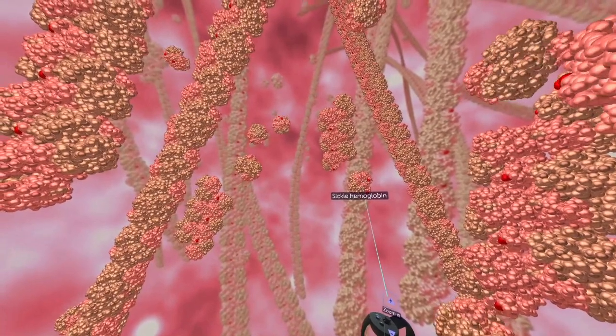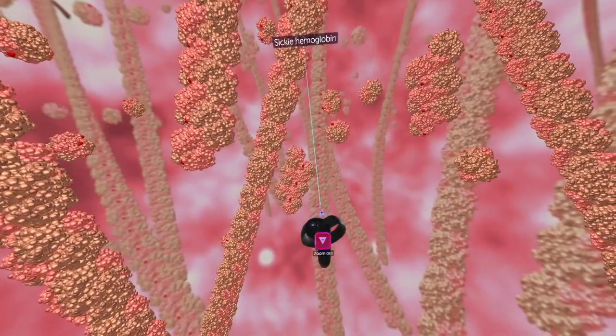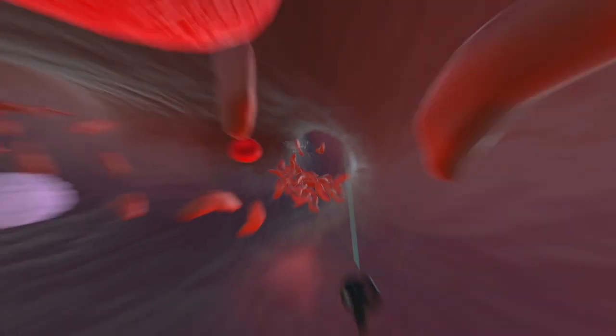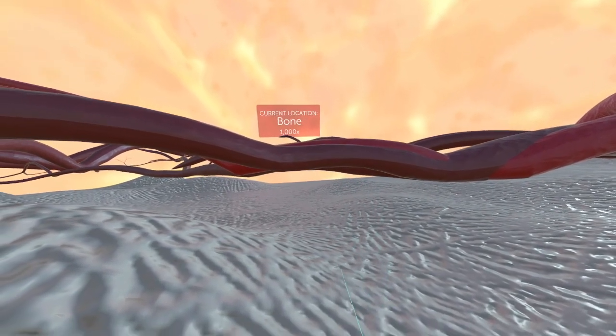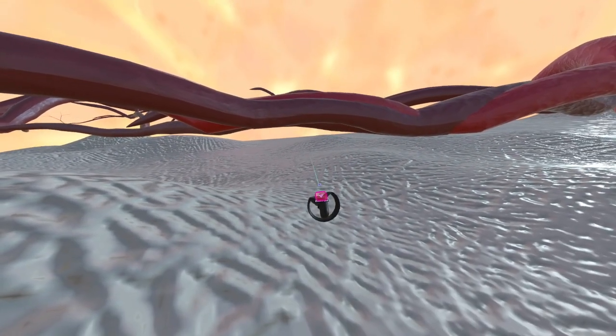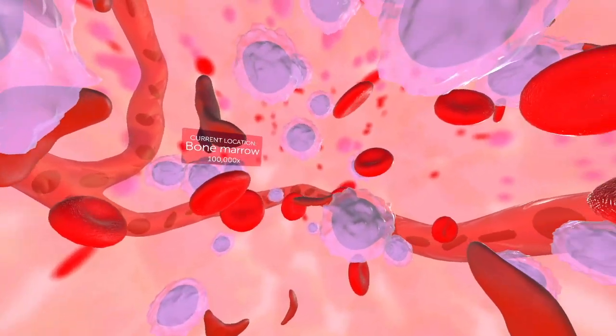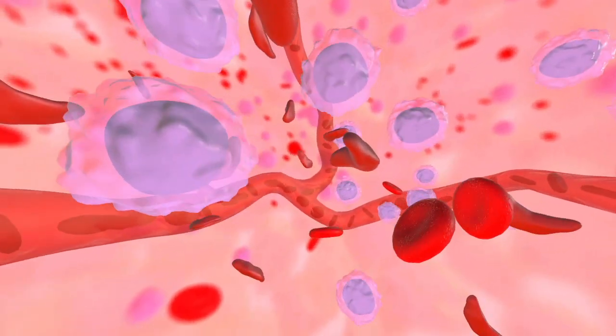To do this, we're going to leave the sickled cell, so you're going to want to hold down on your controller to zoom back out, and then let's go out one more time because we want to go to the bone marrow. Bone marrow is inside your bones, so let's zoom into the bone and look around.